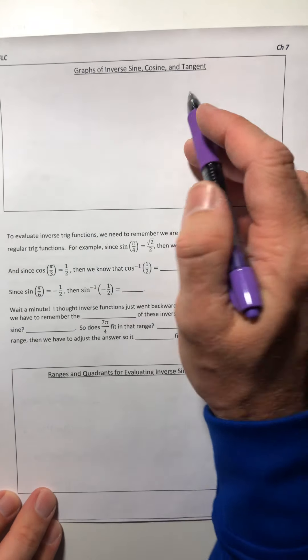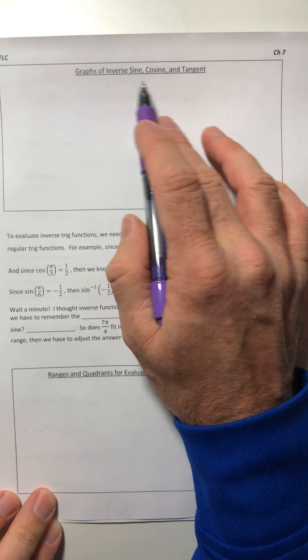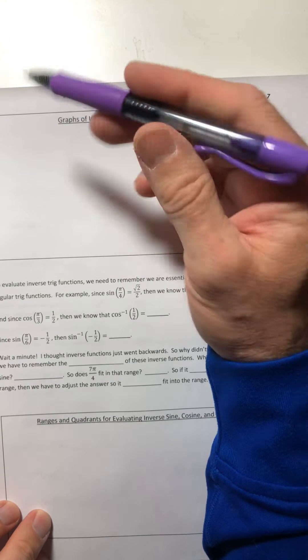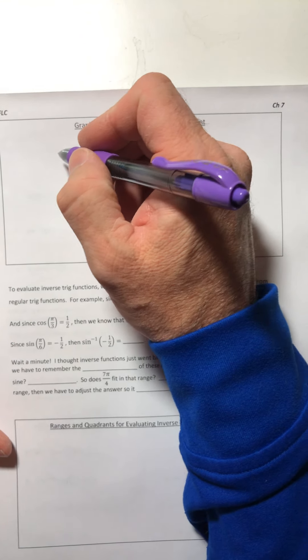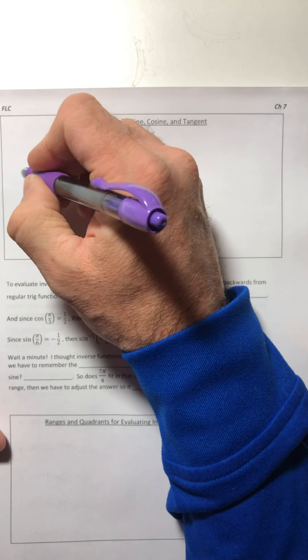All right campers, welcome back. So let's go and look at the graphs of these three inverse trig functions: sine, cosine, and tangent. And in case you're wondering, my blue pen was running out of ink, so I'll just switch to purple. Okay, so inverse sine we already looked at in the previous video.